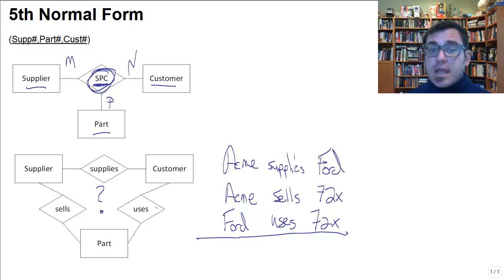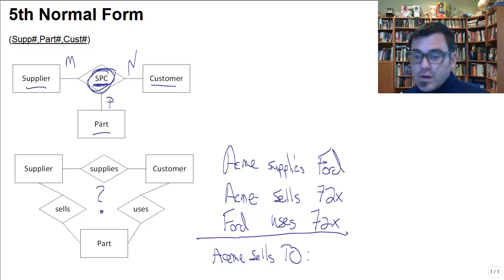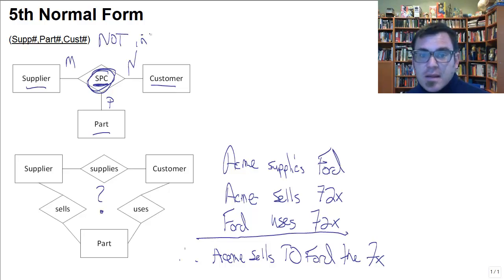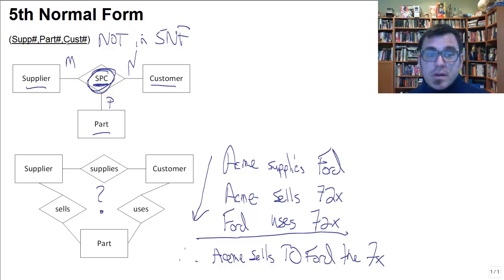Or are we? If there is a business rule that makes these three types of facts necessarily imply that Acme sells to Ford the 72X — if these three things therefore necessarily and inescapably confirm that Acme sells to Ford the 72X — then this relation is not in 5NF. However, if these three things don't necessarily lead by inescapable course to Acme sells to Ford the 72X, then this relation is in 5NF and looks just fine.